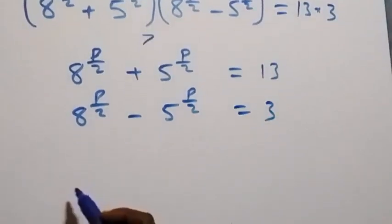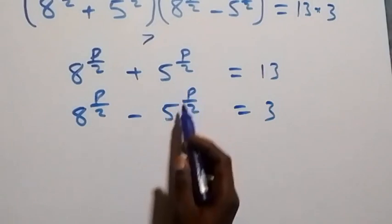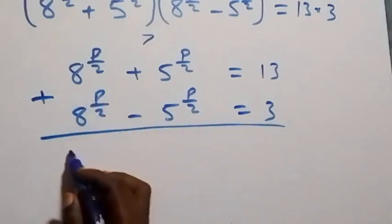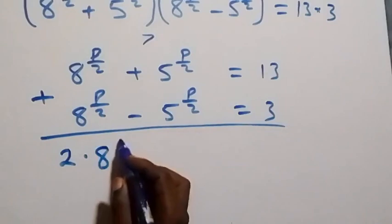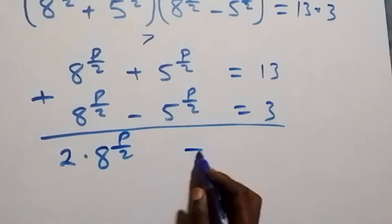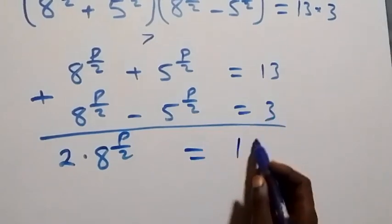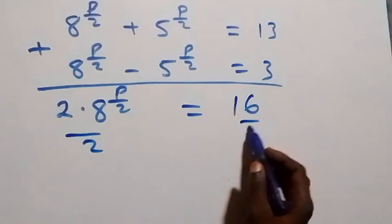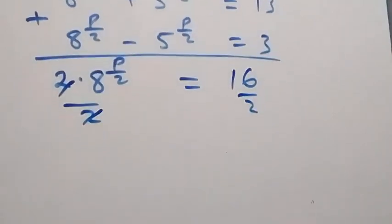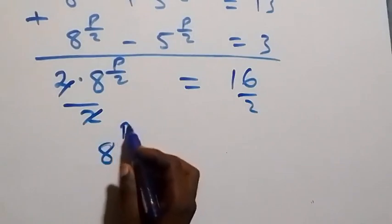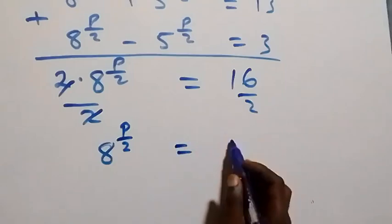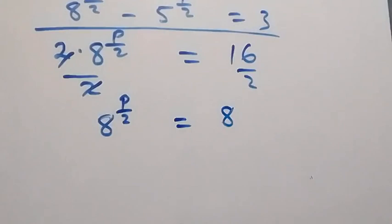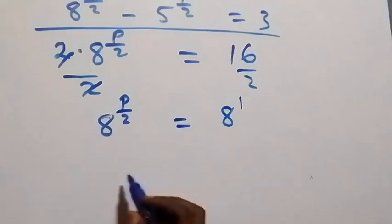We solve by elimination — adding the two equations. When we add, we get 2 times 8 raised to power p over 2 equals 13 plus 3, that's 16. Dividing both sides by 2, we are left with 8 raised to power p over 2 equals 8. And 8 equals 8 raised to power 1.